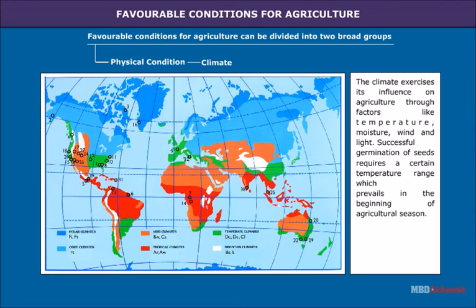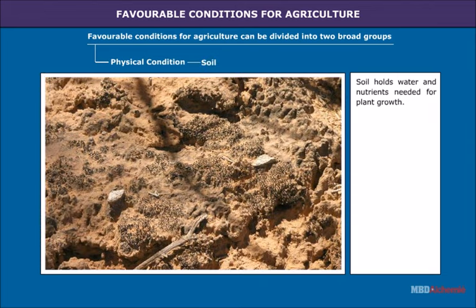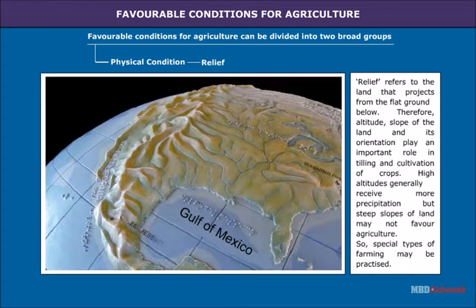Successful germination of seeds requires a certain temperature range which prevails in the beginning of the agricultural season. Soil holds water and nutrients needed for plant growth. Relief refers to the land that projects from the flat ground below. Therefore, altitude, slope of land and its orientation play an important role in tilling and cultivation of crops. High altitudes generally receive more precipitation but steep slopes of land may not favor agriculture, so special types of farming may be practiced.